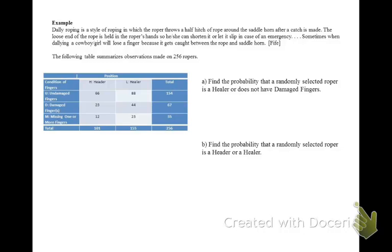We want to find the probability that a randomly selected roper is a healer, and coming into notation, that's an L, or, that means union, does not, that means it's not happening, it's a complement of this thing, have damaged fingers. And damaged fingers, in terms of notation, is a D.